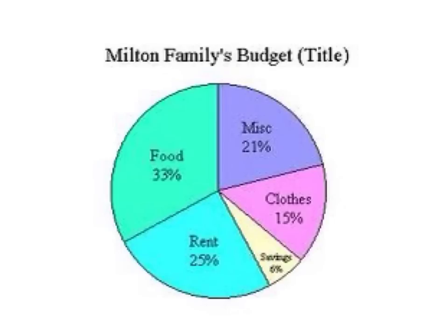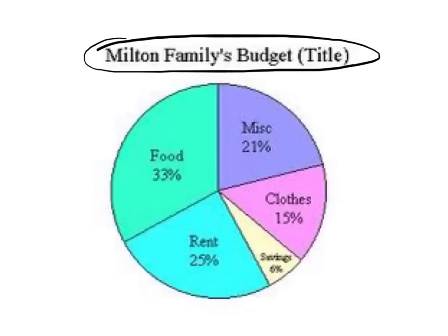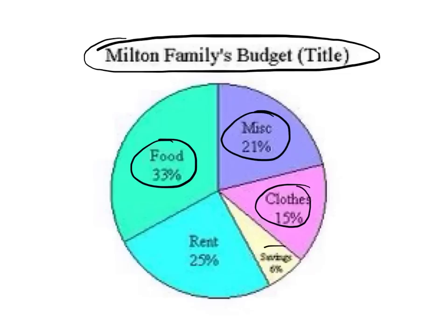This one here is different again, but the same things apply. There's a title at the top to explain what the graph is about. This time they've actually placed the labels inside the pie, rather than having a key or placing them outside. This makes it quite easy to look at and determine what the percentages are. You can quite easily see which is the biggest one — it's food.